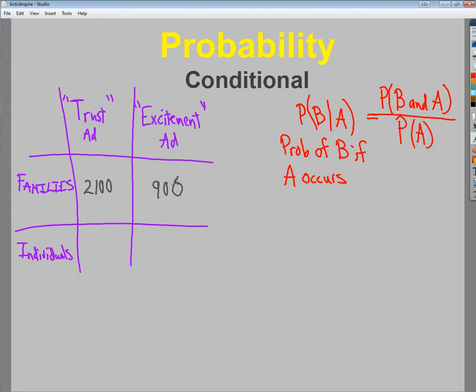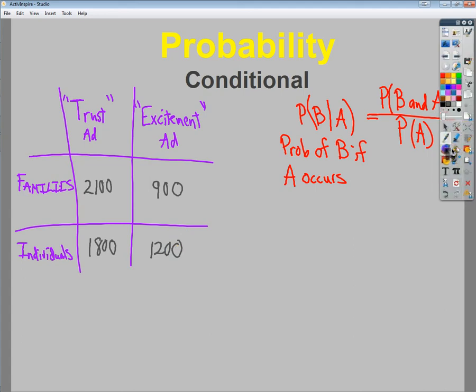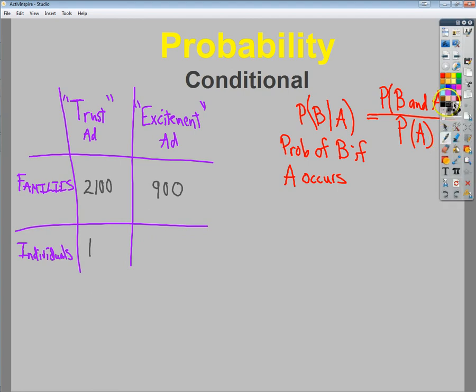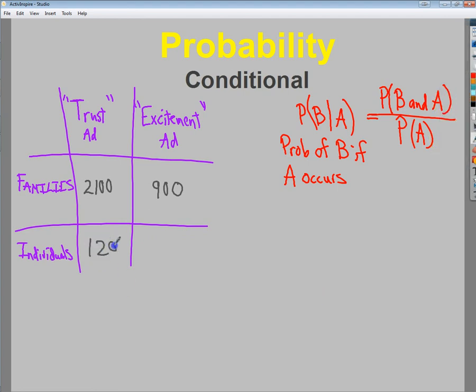On the other hand, when I look at individuals, I'll say 1,800 individuals chose the trust ad, whereas on the other end of the spectrum, 1,200 chose excitement. Seems unlikely, so let's flip the individuals, because that seems more likely that they would choose excitement. You want to trust if you're starting to get a little older. So let's just do 1,200 and 1,800.